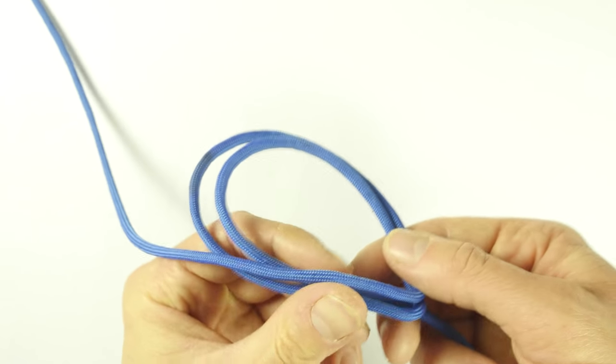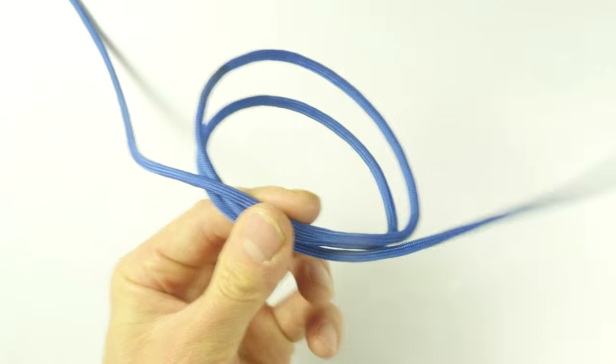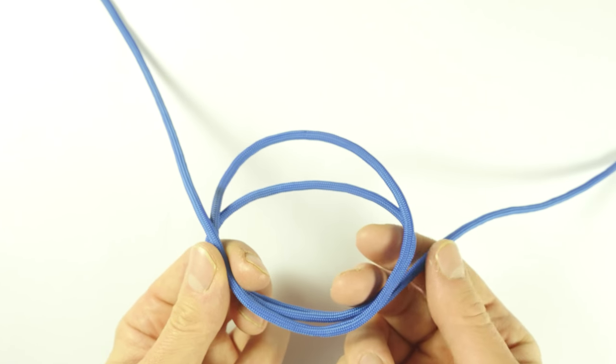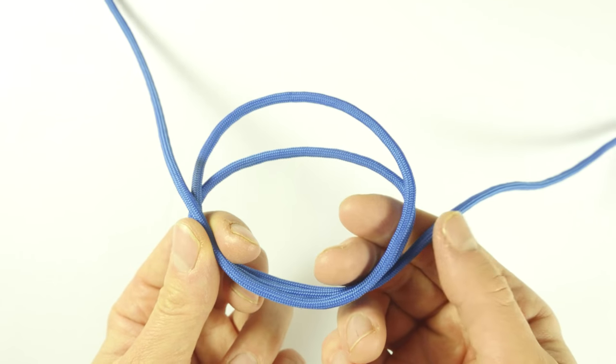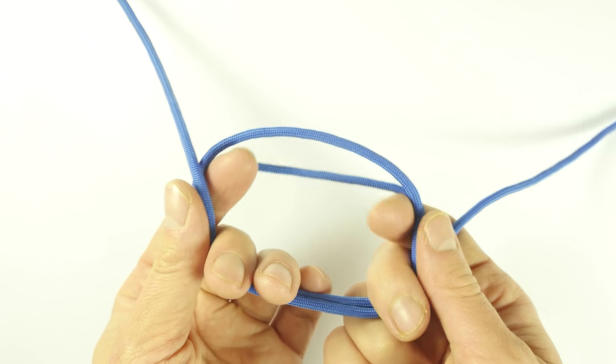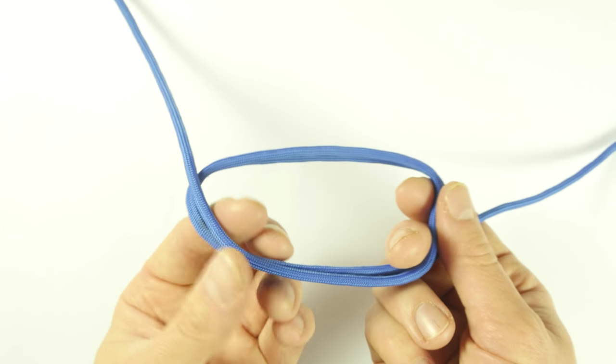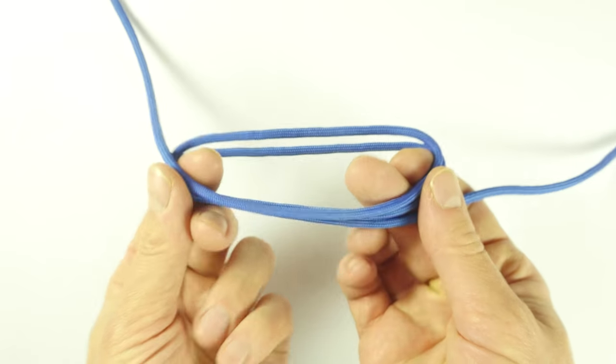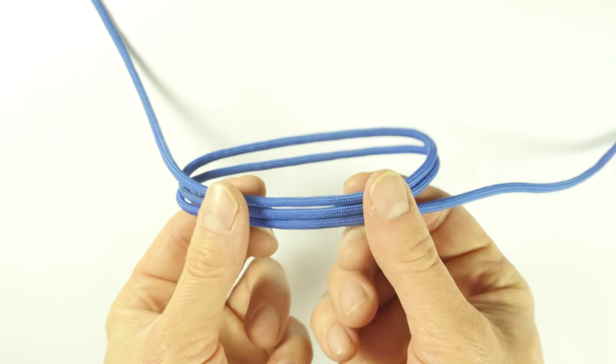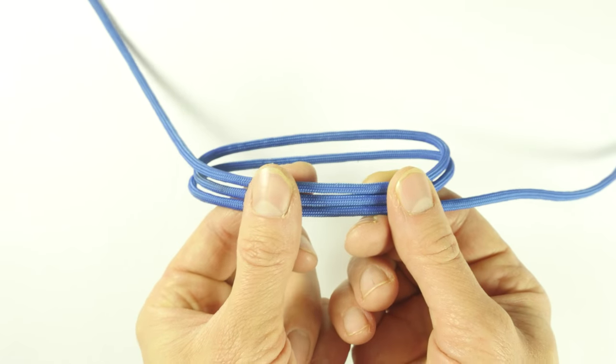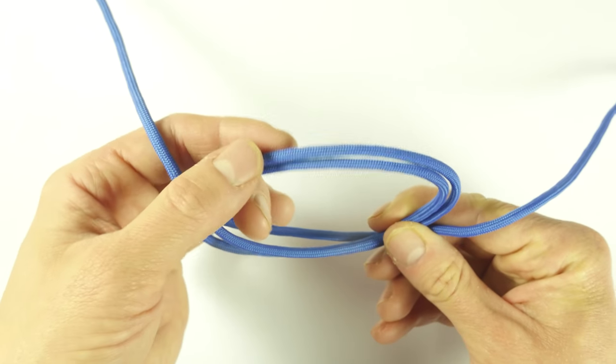Grab your strands so that you have one end to each of the sides, so one to the right, one to the left. Spread apart your loops a little bit, like this. Make sure that the strands are lined up. We have three strands at the bottom, two at the top.